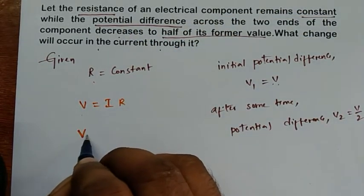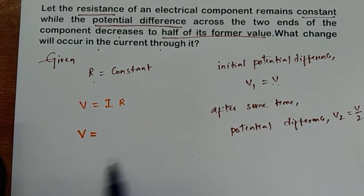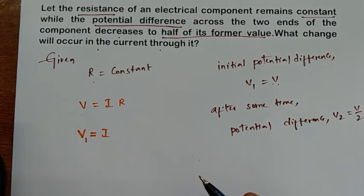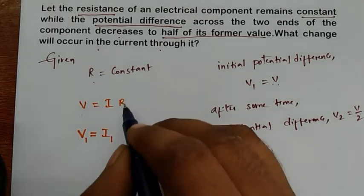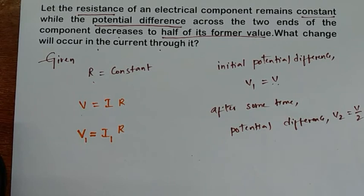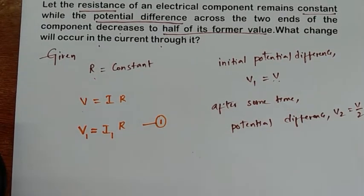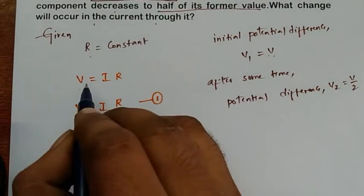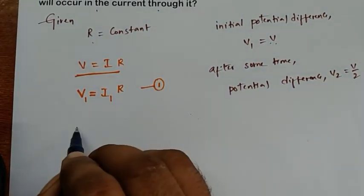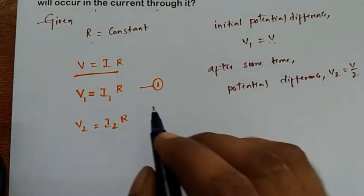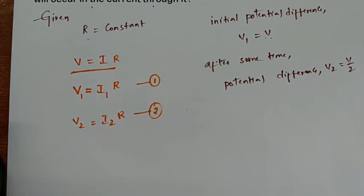Applying initial conditions: V1 is equal to I1 times R. R is constant, so we simply write R. This is equation number one. Applying the second condition: V2 is equal to I2 times R — here also R only, because resistance is constant as given in the problem.